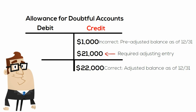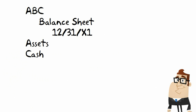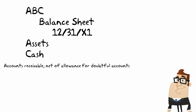So, in order for management to adjust its incorrect pre-adjusted credit balance of $1,000 to the correct adjusted credit balance of $22,000, it will need to record the following adjusting entry: Debit Bad Debt Expense $21,000; Credit Allowance for Doubtful Accounts $21,000. By making these proper adjusting entries, what will now appear on the balance sheet based on the adjusted trial balance will be: Accounts Receivable, net of Allowance for Doubtful Accounts of $22,000, equals $178,000.